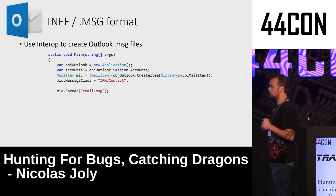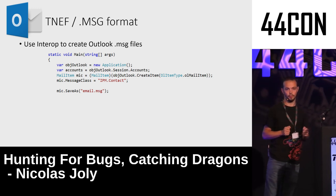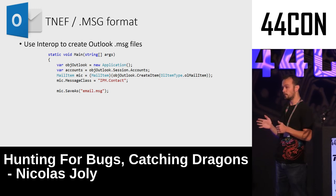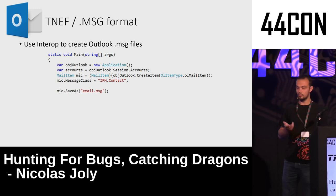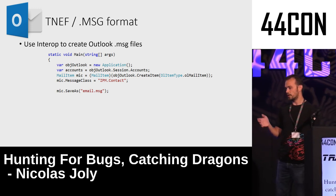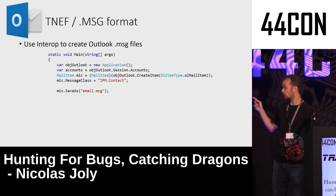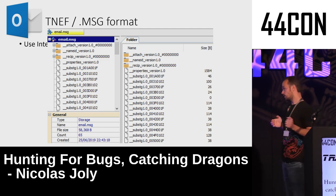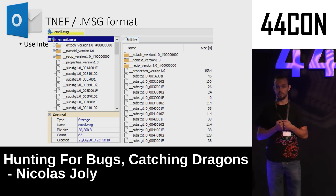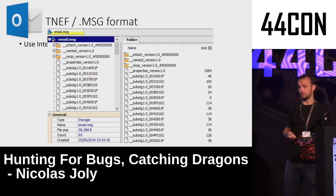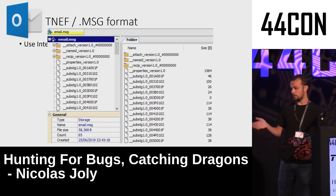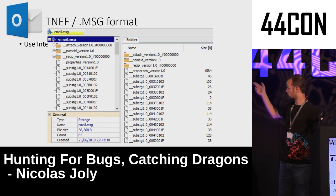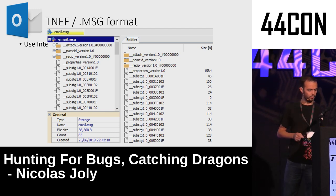Now let me briefly cover the other file format Outlook supports: the .msg format. Several ways to generate these files — copy-paste from the client to the desktop, or use the interop library. The interop library is preferable since copy-paste can lose information. When you open a .msg file, you'll see it's a CFBF (Compound File Binary Format) storage — not a random binary — consisting of streams and sub-storages, including a property version 1.0 stream.